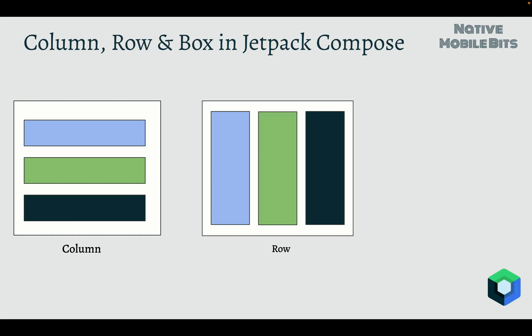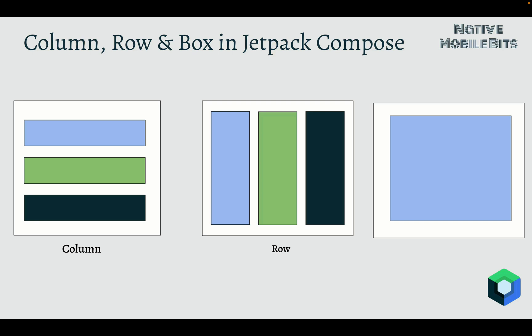Last but not least is the inbuilt Box composable. In Box, we put one composable on top of another. For example, we have one composable, then on top of it we put another, and on top of that another one. Box is exactly like FrameLayout, where we want to put one child on top of another inside our layout. Now let's cover all of these inbuilt composables with examples.